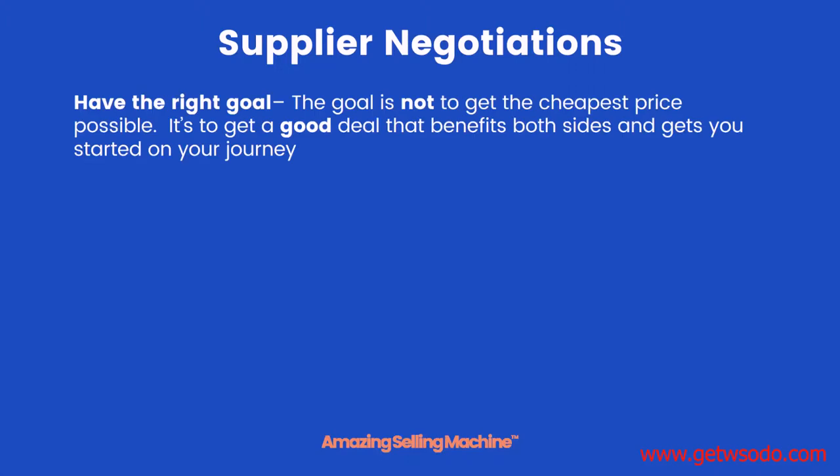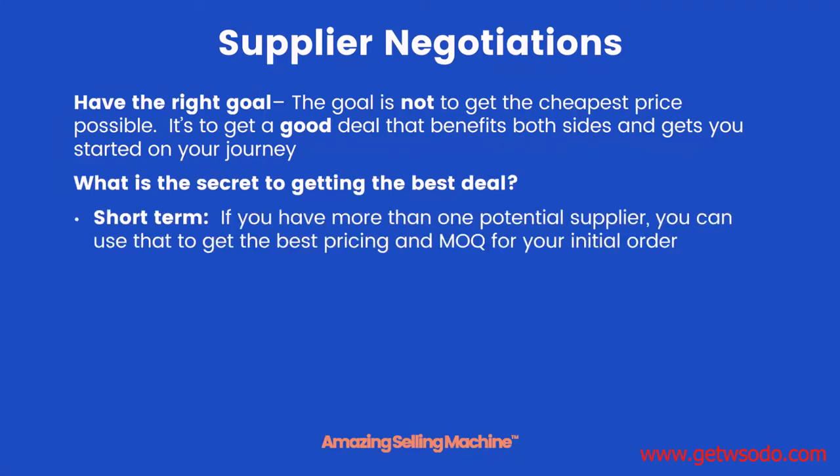Throughout this entire process, it's critical to have the right goal. The goal is not to get the cheapest price possible — it's to get a good deal that benefits both sides and gets you started on your journey towards building your own business. So what is the secret to getting the best deal? There are two ways to look at it. In the short term, if you have more than one potential supplier, that's the easiest way — you can use both suppliers to get the best pricing and MOQ for your initial order.